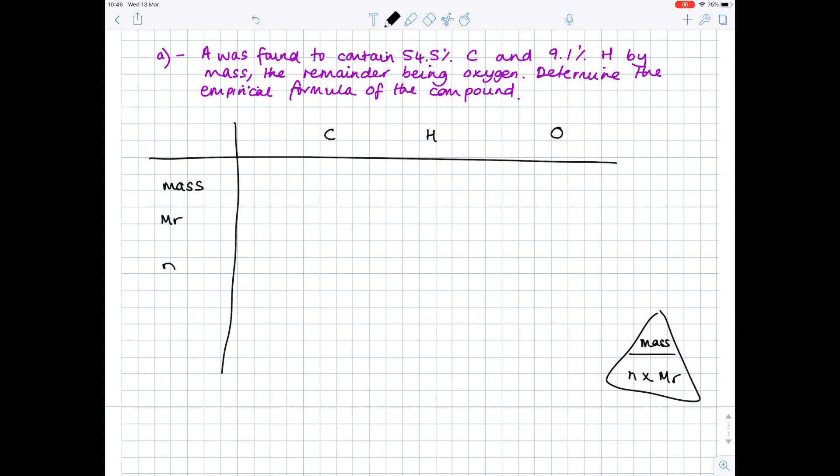You're going to be using this formula triangle, which states that mass equals number of moles times MR. You've been told that the compound is 54.5% carbon. Because it's basically a ratio, you can just copy that number down as being the mass of carbon. The same is true for hydrogen, so that's 9.1. To work out the amount of oxygen, because the substance as a whole adds up to 100%, you need to do 100 take away 54.5 take away 9.1 to get 36.4 as your amount of oxygen.